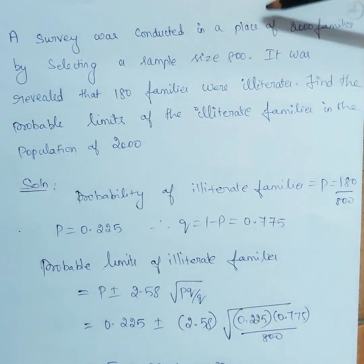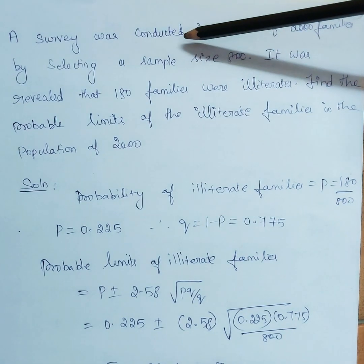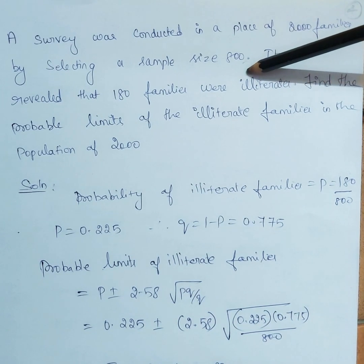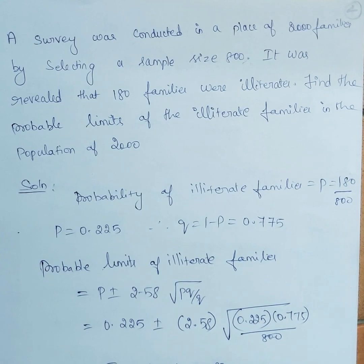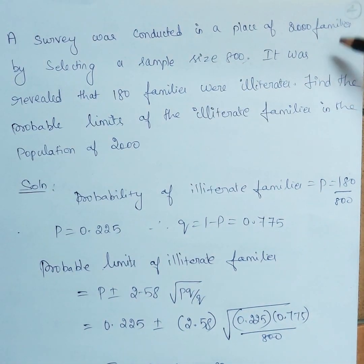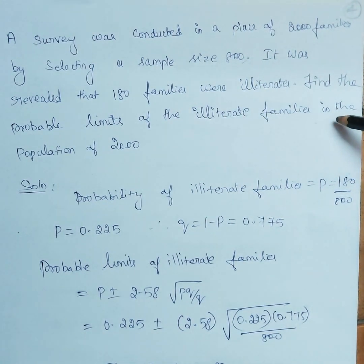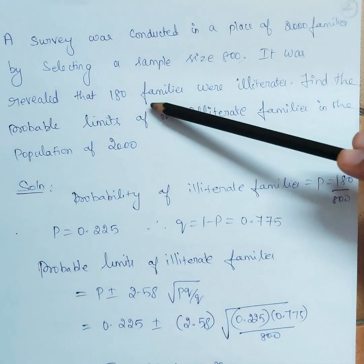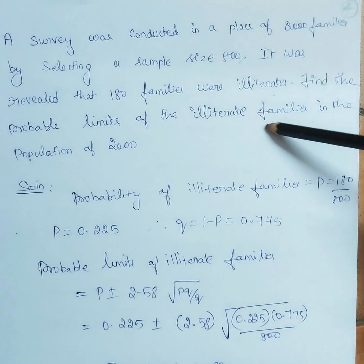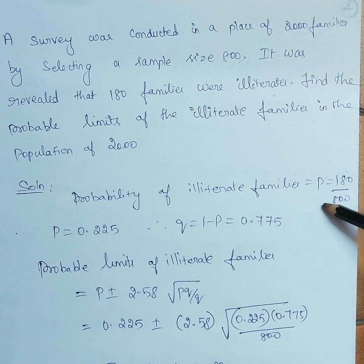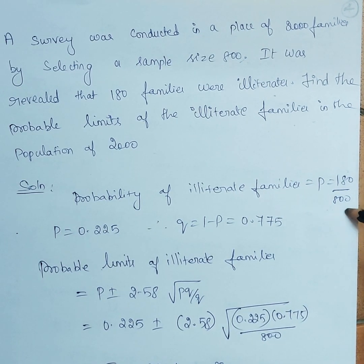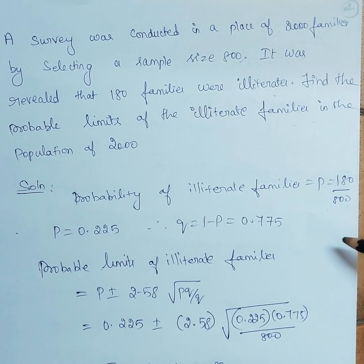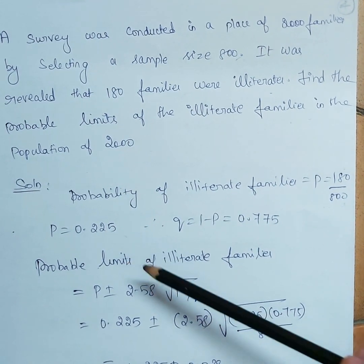Another example: a survey was conducted in a place of 2000 families by selecting a sample size of 800. Note that n is 800 — this is the sample size — while 2000 is the overall population. It was revealed that 180 families were illiterate. Find the probable limits of illiterate families in the population of 2000. P equals 180 divided by 800, giving 0.225.